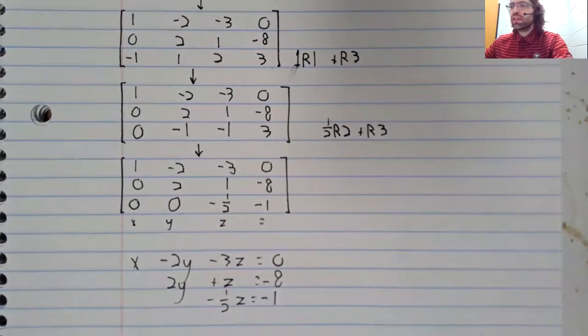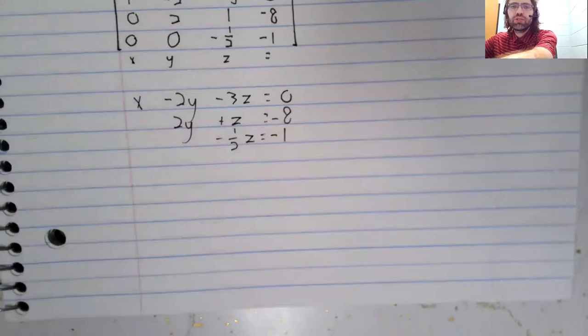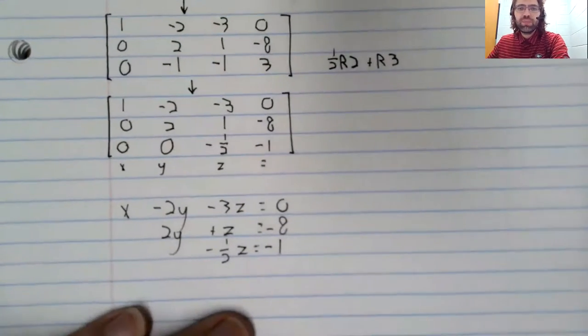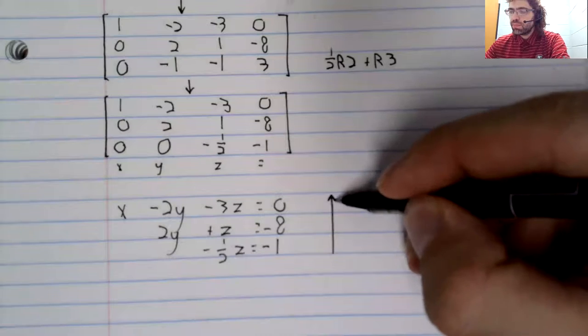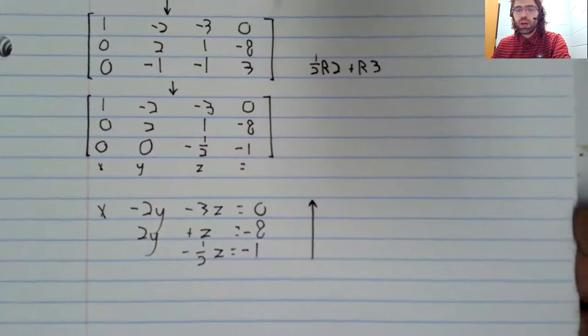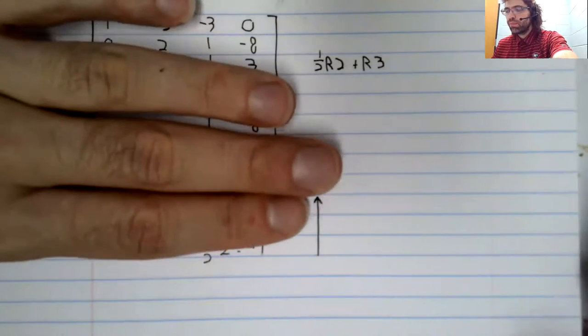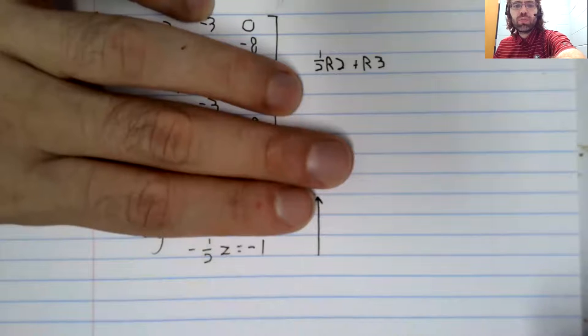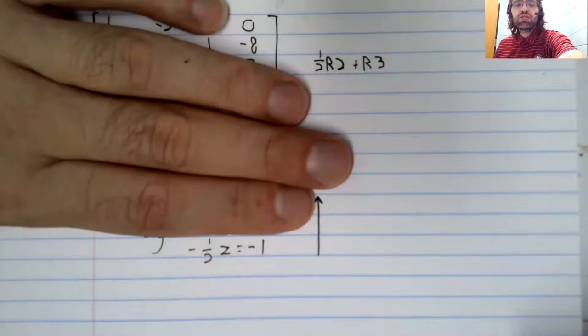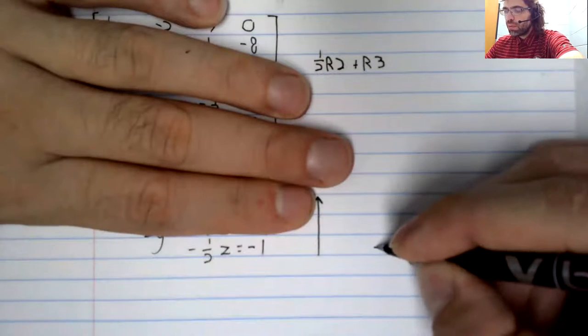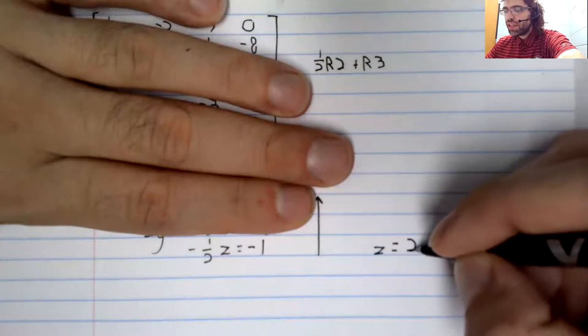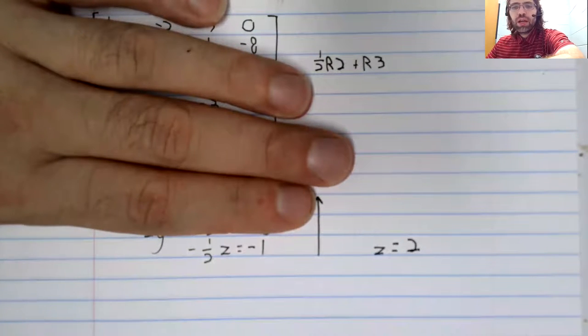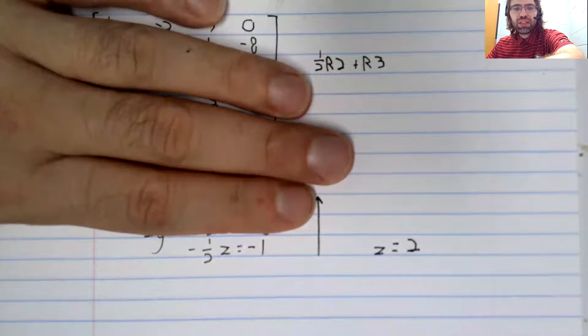The trick is to start with the bottom and work up. This last equality, we solve for z. We multiply both sides by negative two and we get z equals positive two.